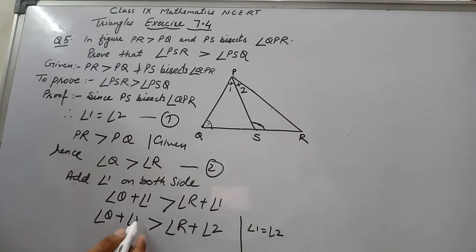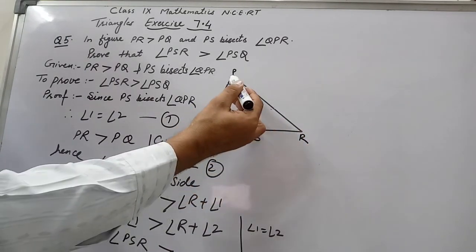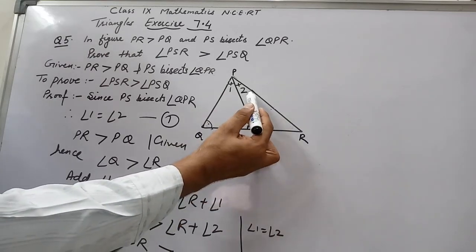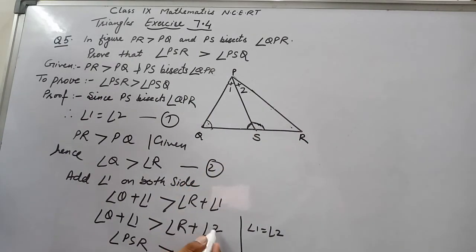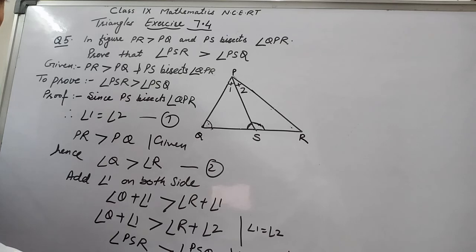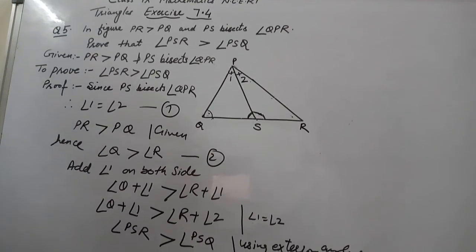So I write angle PSR is greater than angle R plus angle 2. In triangle PRS, angle PSQ is the exterior angle, so it equals the sum of angle 2 and angle R. Therefore I write angle R plus angle 2 as angle PSQ. Using the exterior angle property, angle PSR is greater than angle PSQ. Hence proved.